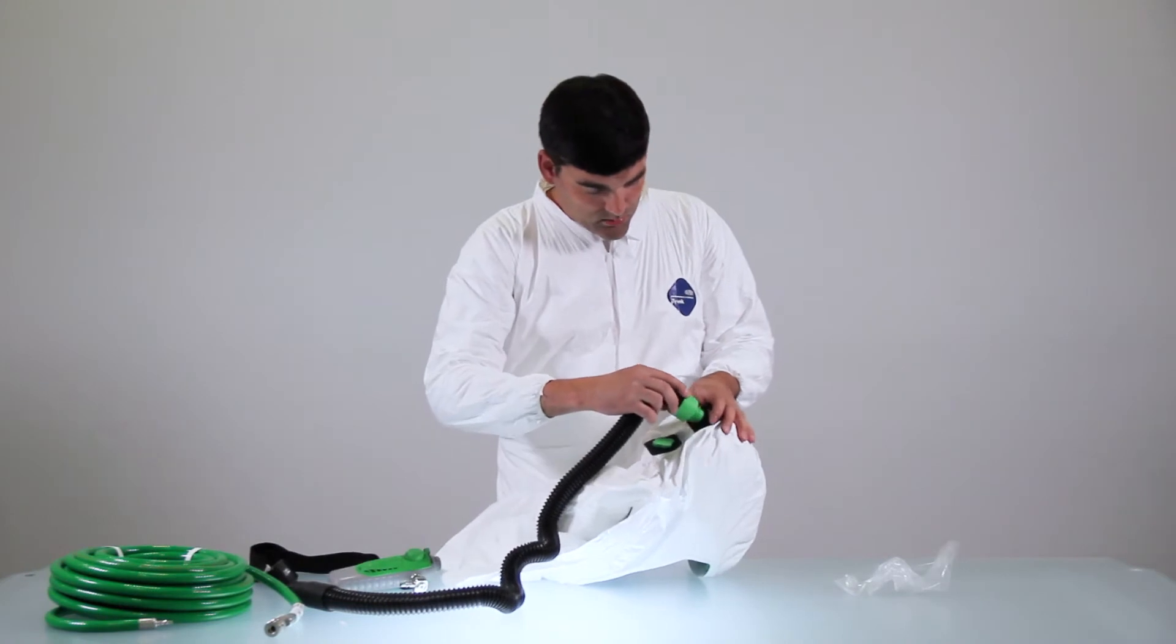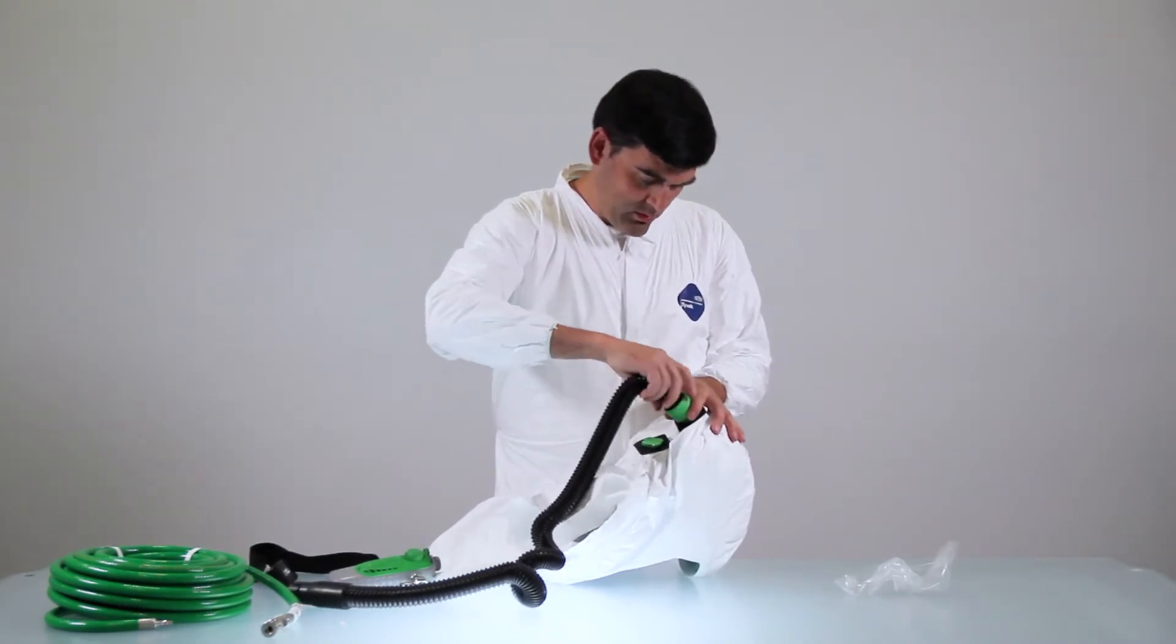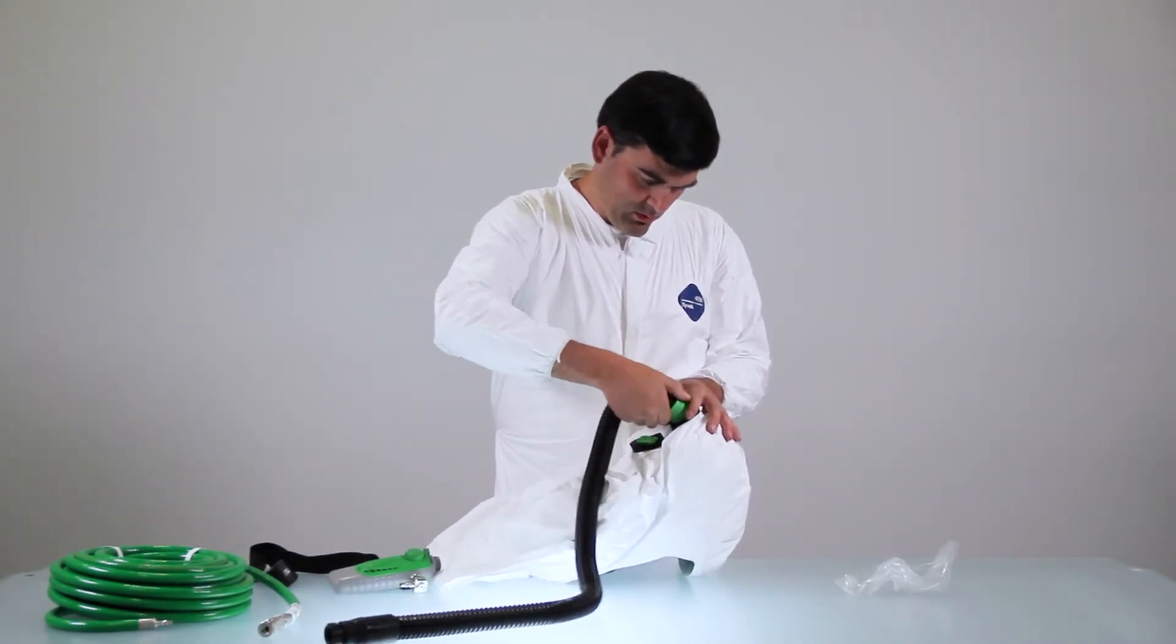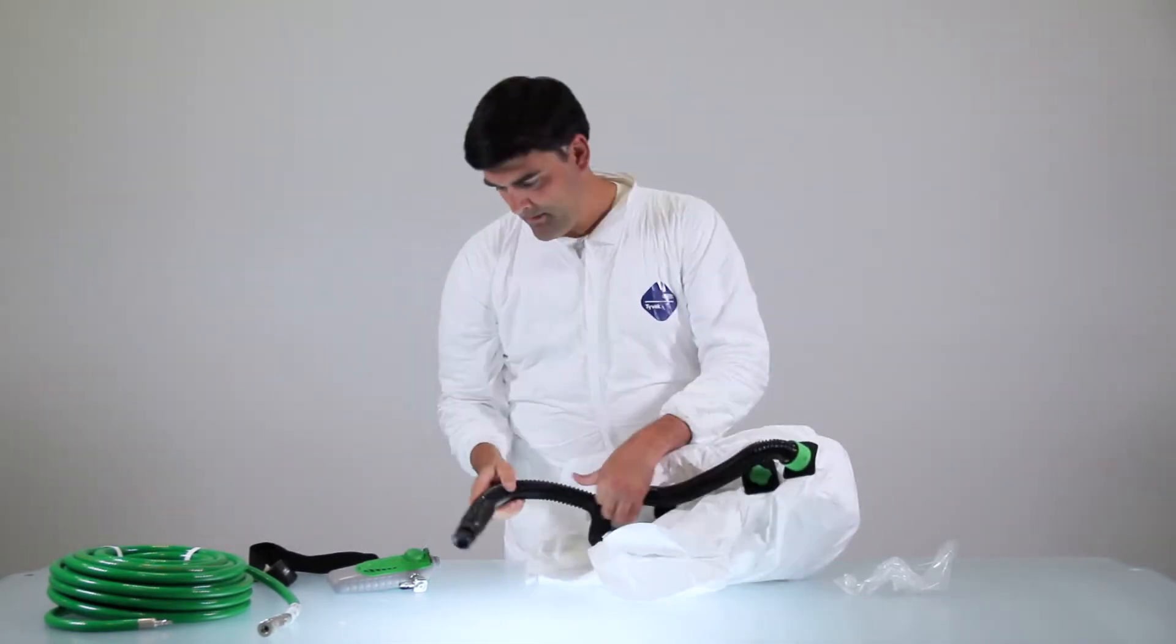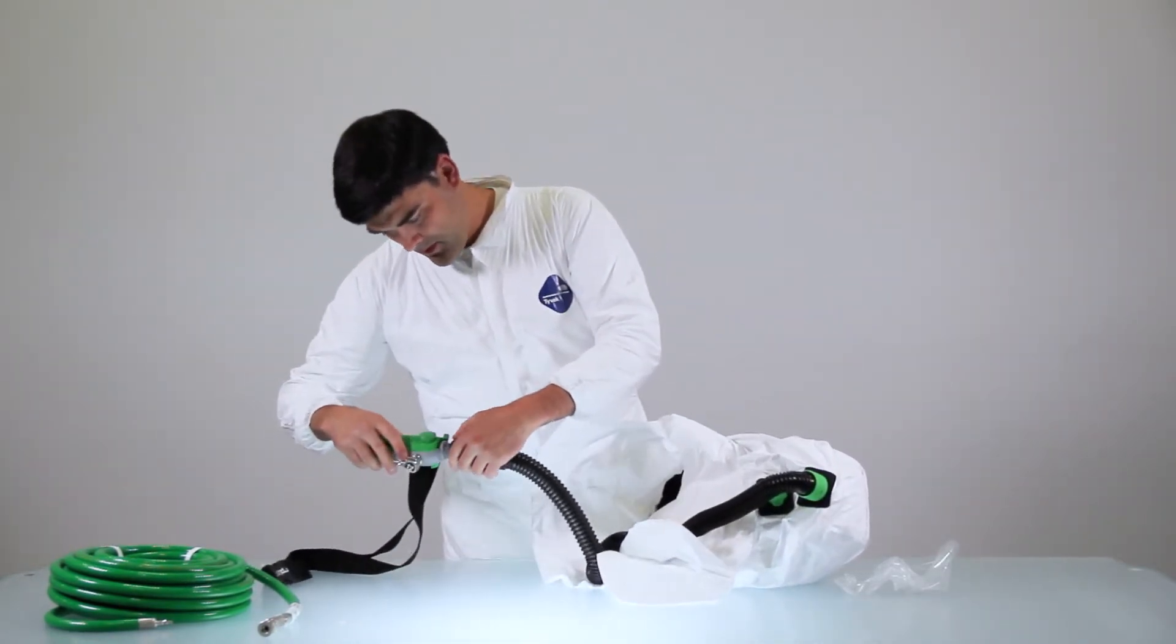Thread the breathing tube into the T-Link. Then attach your chosen flow control device.